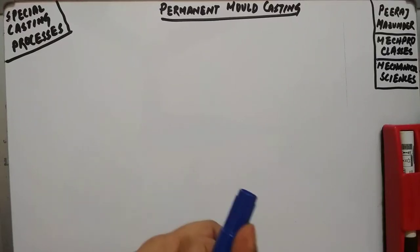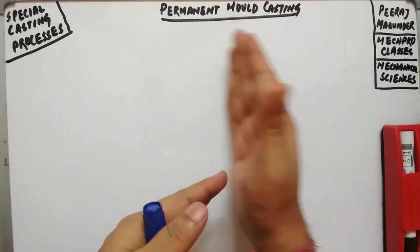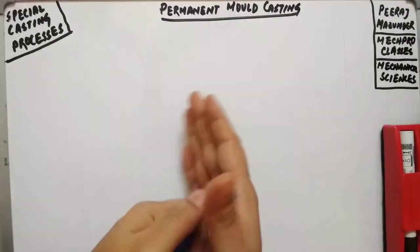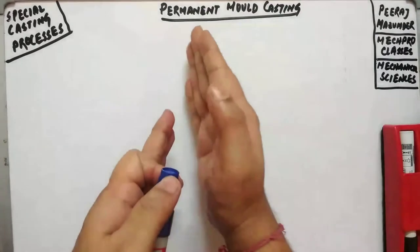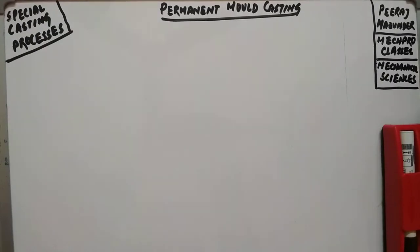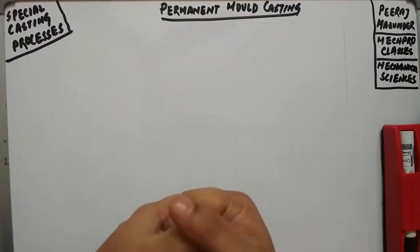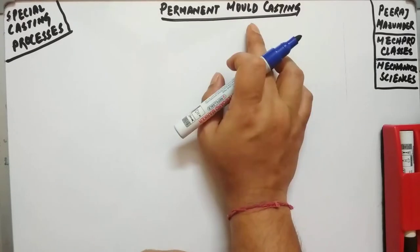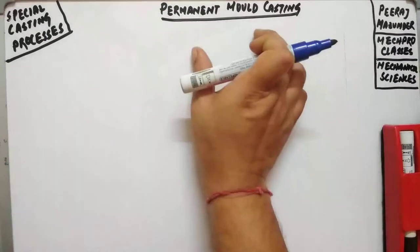Welcome again to Mech Pro Classes. We are continuing our special casting processes under mechanical sciences. Today we will be discussing permanent mold casting. We will learn the different processes involved during the preparation of permanent mold casting, as well as its advantages, limitations, and applications. In all the processes covered so far, like shell molding and investment casting, a mold needs to be prepared for each casting produced. From the name you can guess — it is a permanent mold.